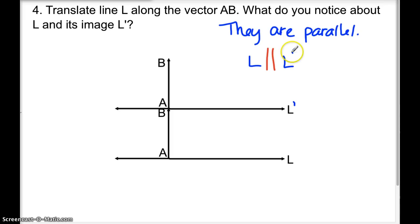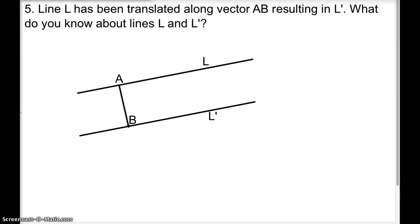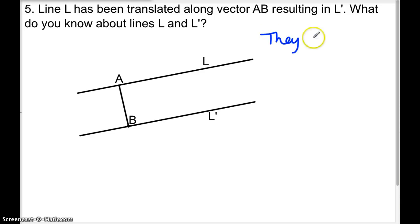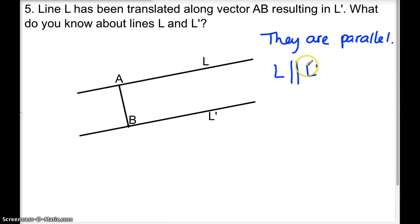Number five: line L has been translated along vector AB, resulting in L prime. Here's the original line above, and here's the new image moved down. We notice that they are parallel, just like the last example. We show that L is parallel to L prime.